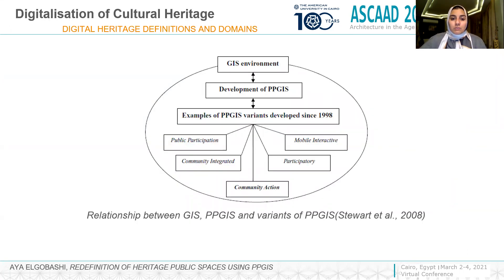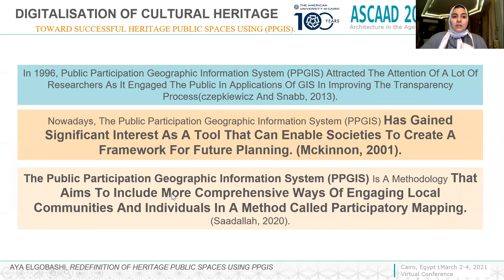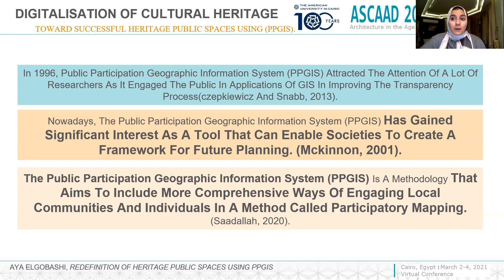Here is the relationship between GIS and PPGIS. PPGIS was developed in 1989 to involve community actions and create a framework for future planning, as well as to include a more competitive way of access to public space. Research shows we should use GIS to make the process transparent and accessible for all users. PPGIS has gained significant interest as a tool that enables society to create a framework for future planning and to engage local communities and individuals through a method called participatory mapping — which is applied in this case study.